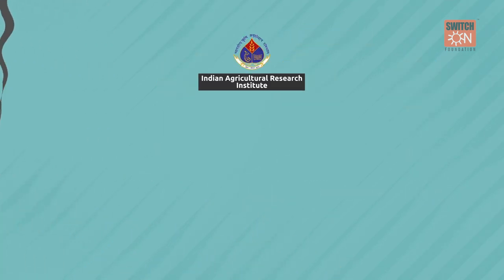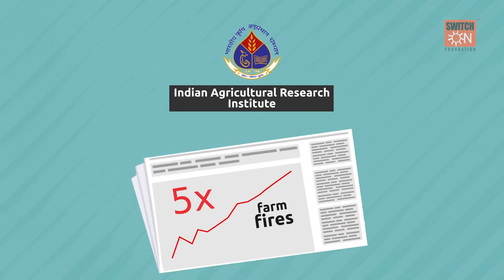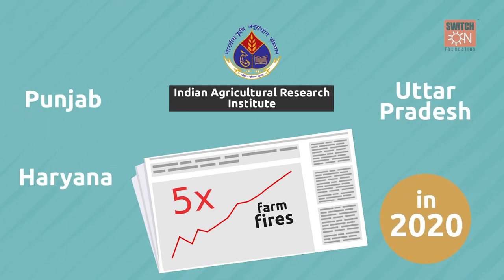According to the Indian Agricultural Research Institute (IARI), farm fires increased five-fold in Punjab, Haryana and Uttar Pradesh in 2020.